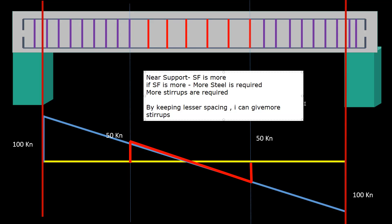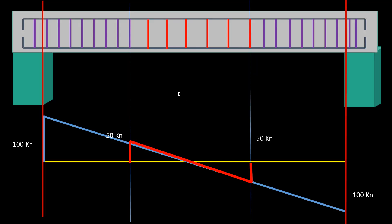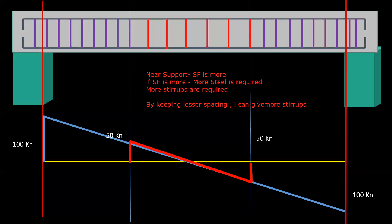So you are able to understand this. That is why practically, near the support where shear force is more, more stirrups are required. And by keeping less spacing I can give more stirrups. So practically you can see near the support, shear force is more, so more steel is required. More steel means more stirrups, and more stirrups can be given by keeping lesser spacing.